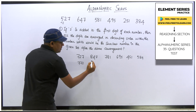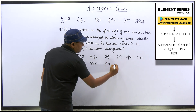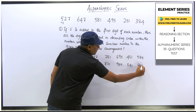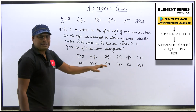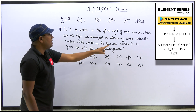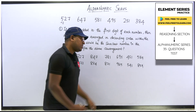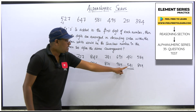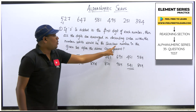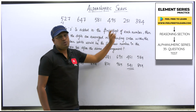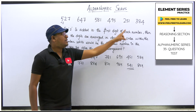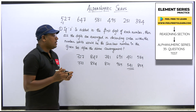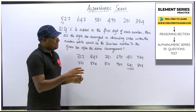Arranging in descending order: 727 becomes 772, 847 becomes 874, 981 becomes 981, 895 becomes 965, 651 becomes 651, 784 becomes 874. Now we need to find which is the smallest number. Looking at the hundreds digits: 700, 800, 900, 900, 600, 800 — so 651 is the smallest, which came from original number 251. The answer is 251. Very easy and simple!